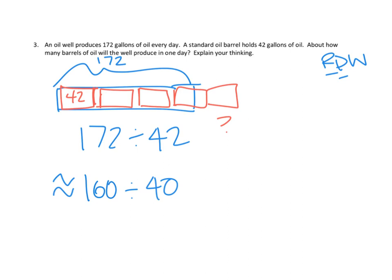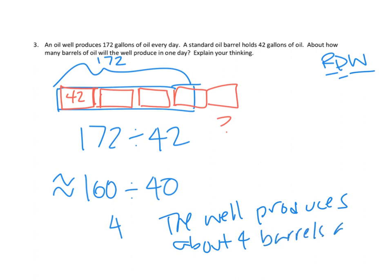And now I can go ahead and do this probably in my head. I can say this is 16 tens divided by four tens. And 16 of anything divided by four of that same thing is going to be four of it. We're simply going to have four. And that actually kind of squares with the way I happen to draw it this way. We think about four barrels will go in this 172 gallons. So I'm going to say the well produces about four barrels a day. But now we've done our read, draw, and write strategy. We've come up with our drawing and we've explained that we're doing an estimate and we've given our answers.